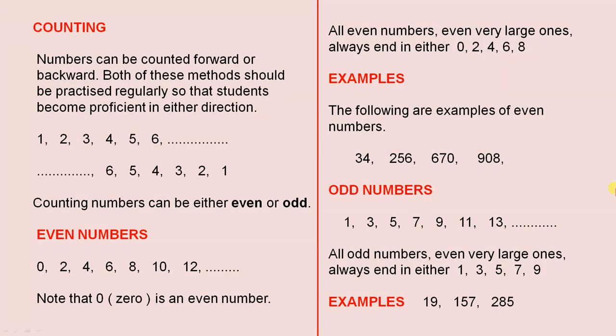Counting. Numbers can be counted forward or backward. Both of these methods should be practiced regularly so that students become proficient in either direction. You can count forward from 1, going up as far as you want, or you can count backwards: 6, 5, 4, 3, 2, 1. You can start from any number.